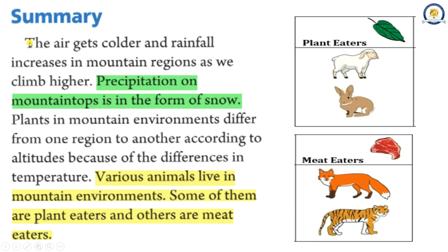Summary. The air gets colder and rainfall increases in mountain regions as we climb higher. Precipitation on mountaintops is in the form of snow. Plants in mountain environments differ from one region to another according to altitudes because of the differences in temperature. Various animals live in mountain environments — some of them are plant eaters and others are meat eaters.